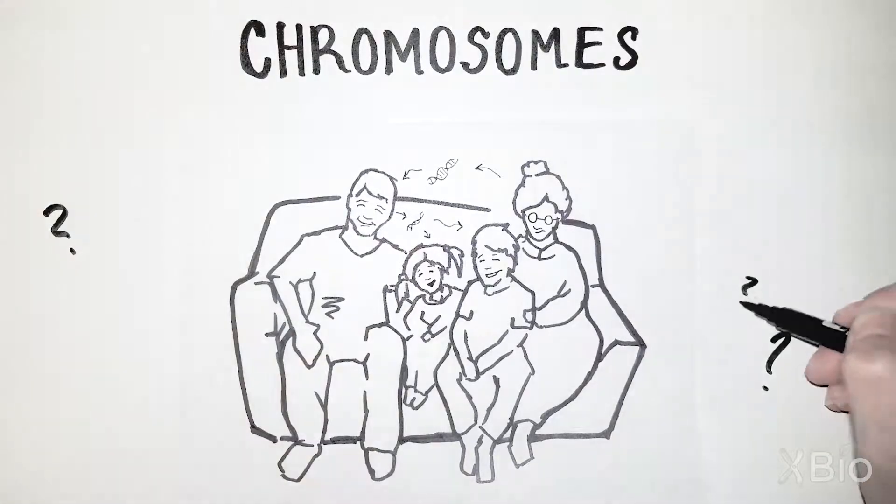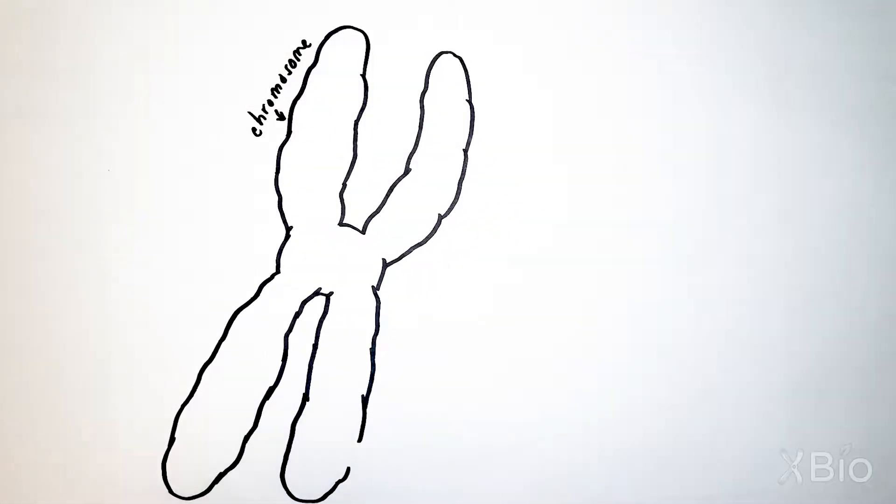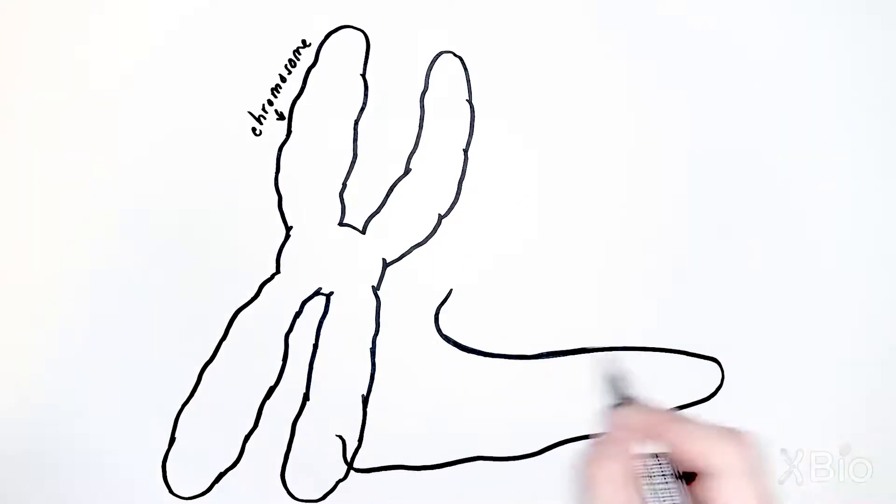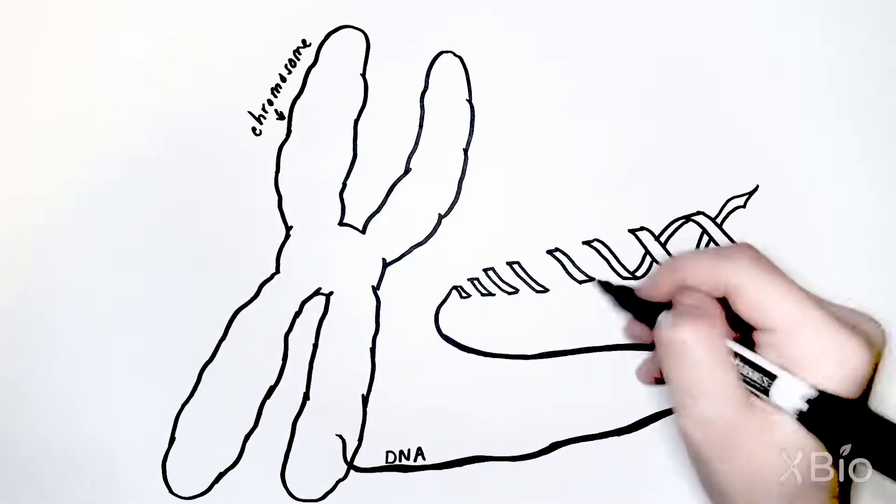But how is your DNA organized? DNA in cells exists in discrete units called chromosomes. Each chromosome is made up of one very long piece of double-stranded DNA that has thousands of genes.